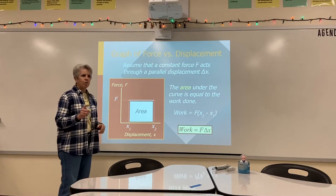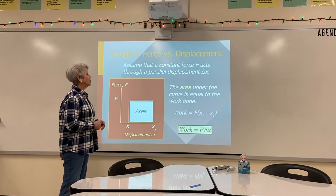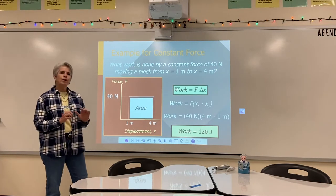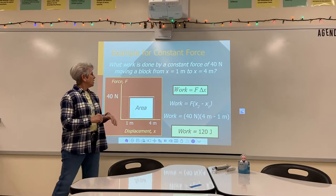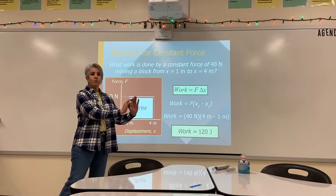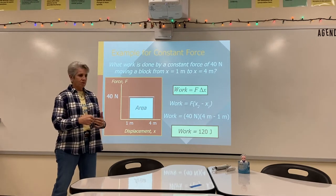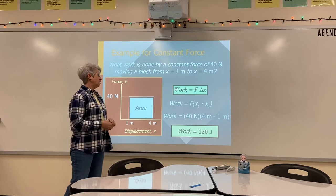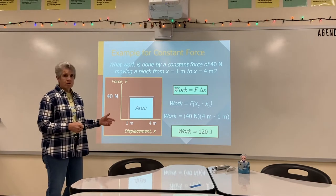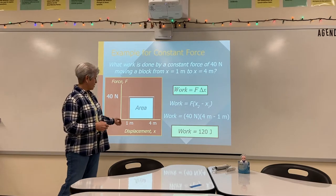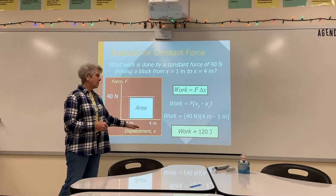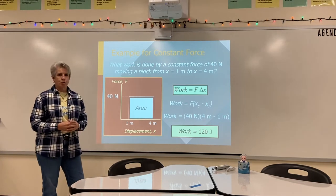Remember that work would be calculated as area under the curve. So if we take an example — if we apply a 40 Newton force to an object and it moves from a position of one meter to a final position of four meters, and we want to know how much work it takes — we would say work equals 40 Newtons times four meters minus one meter, final position minus initial position, delta x. That gives us 120 joules.